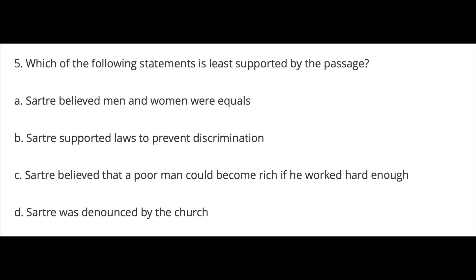Number five: Which of the following statements is least supported by the passage? A. Sartre believed men and women were equals. B. Sartre supported laws to prevent discrimination. C. Sartre believed that a poor man could become rich if he worked hard enough. D. Sartre was denounced by the church.